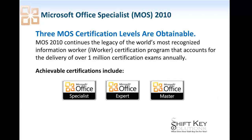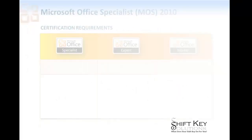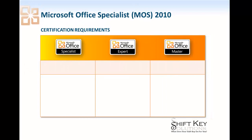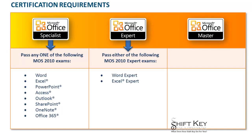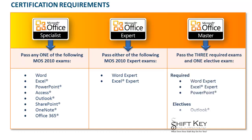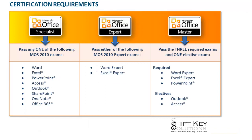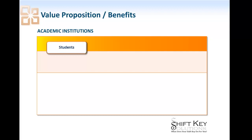At the expert and master levels, here's what's included in the requirements for each level. For a specialist, an individual needs to pass any one of the programs listed. To achieve the expert certification, an individual needs to pass the Word Expert or the Excel Expert certification exam. To achieve a master level certification, an individual has three requirements: Word Expert, Excel Expert, and PowerPoint certification exams, plus one elective of Outlook or Access.